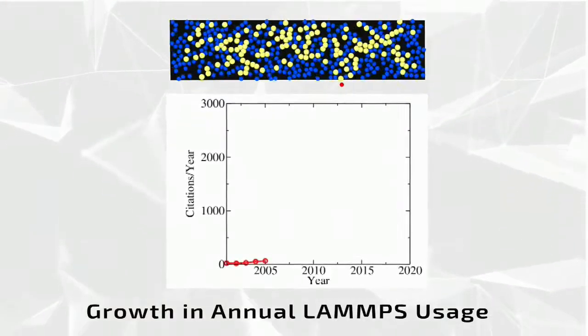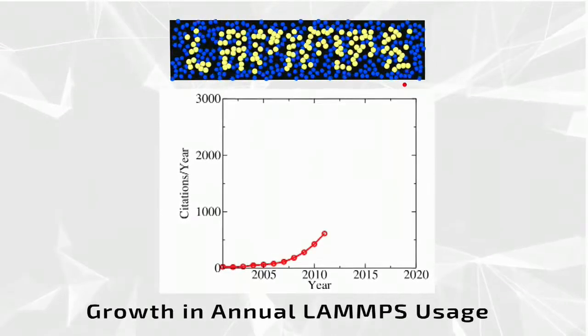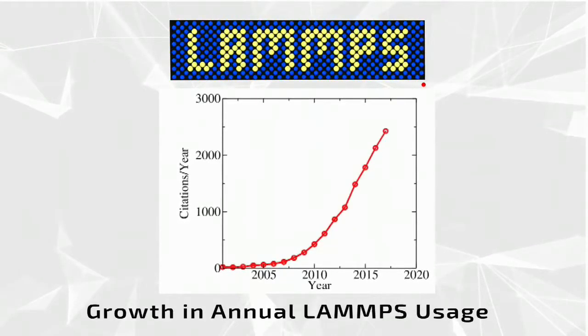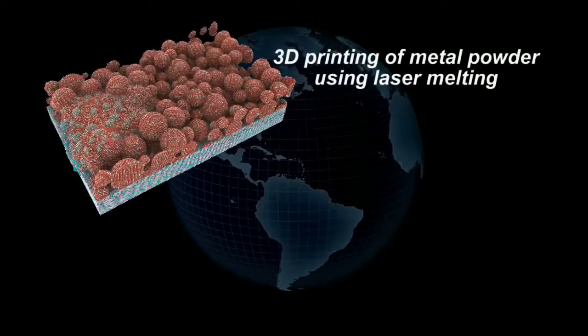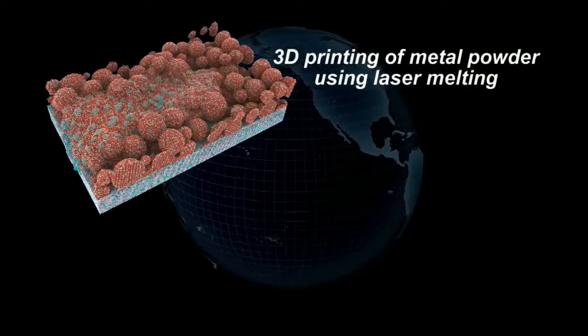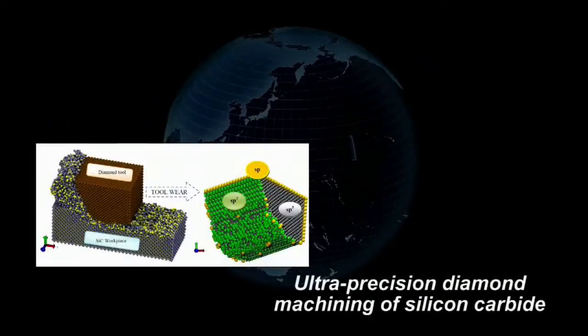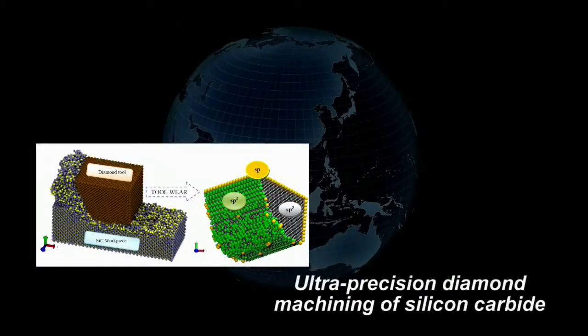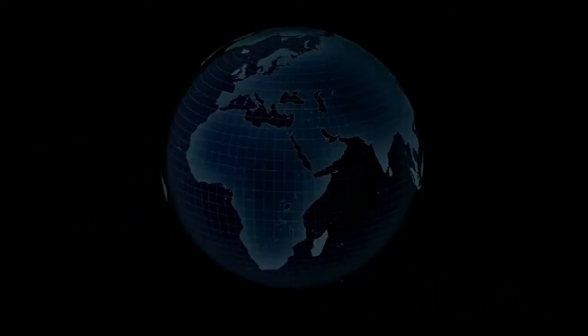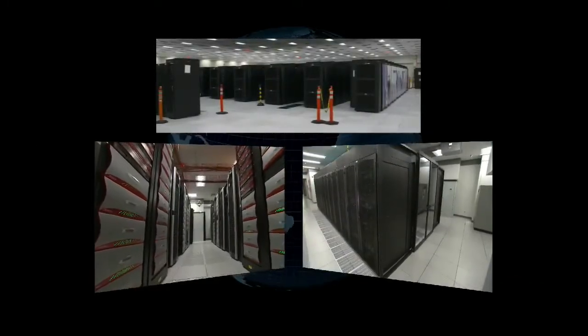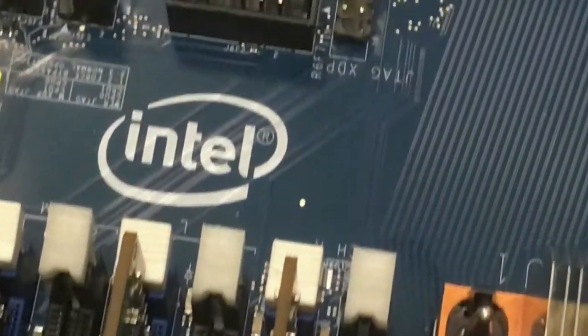The LAMPS Open Source Molecular Dynamics, or MD, code is experiencing tremendous growth in usage. Researchers around the world are responding to its extensive set of models for simulating different materials, its flexibility for adding new models and new functionality, and most recently, powerful accelerator packages that enable it to run on a wide variety of computing hardware. When you invest effort in learning how to do your science in a particular code, you don't want to be limited to a particular physics model, and you don't want to be limited to a particular hardware. And so I think that's what draws a lot of people to LAMPS.